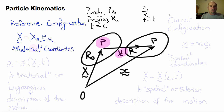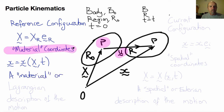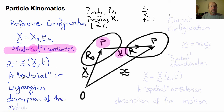We call the coordinates big X, with components X sub R with respect to our frame of reference, the material coordinates. And if we were to write the motion as little x as a function of big X and t, then we would call this a material or Lagrangian description of the motion.